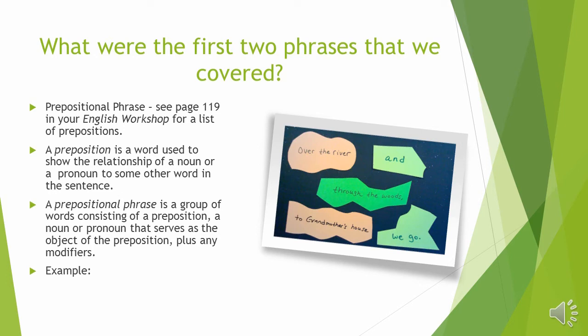The second group of phrases that we covered were prepositional phrases. If you tend to have a hard time remembering prepositions, just look on page 119 in your English Workshop for a list of many of the prepositions. A preposition is a word used to show the relationship of a noun or a pronoun to some other word in the sentence. A prepositional phrase is a group of words consisting of a preposition, a noun or a pronoun serving as the object of the preposition, plus any modifiers that might come in between.